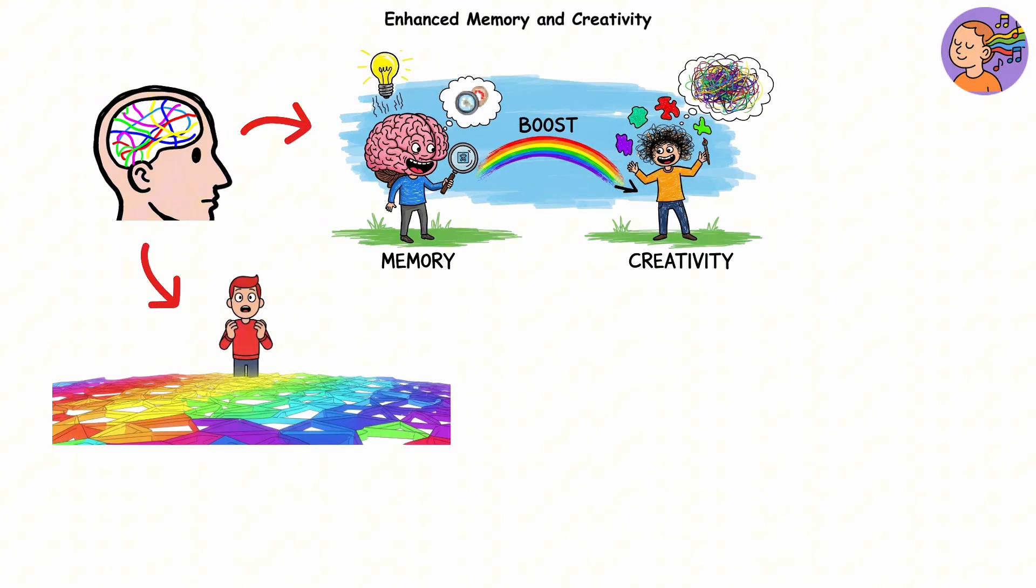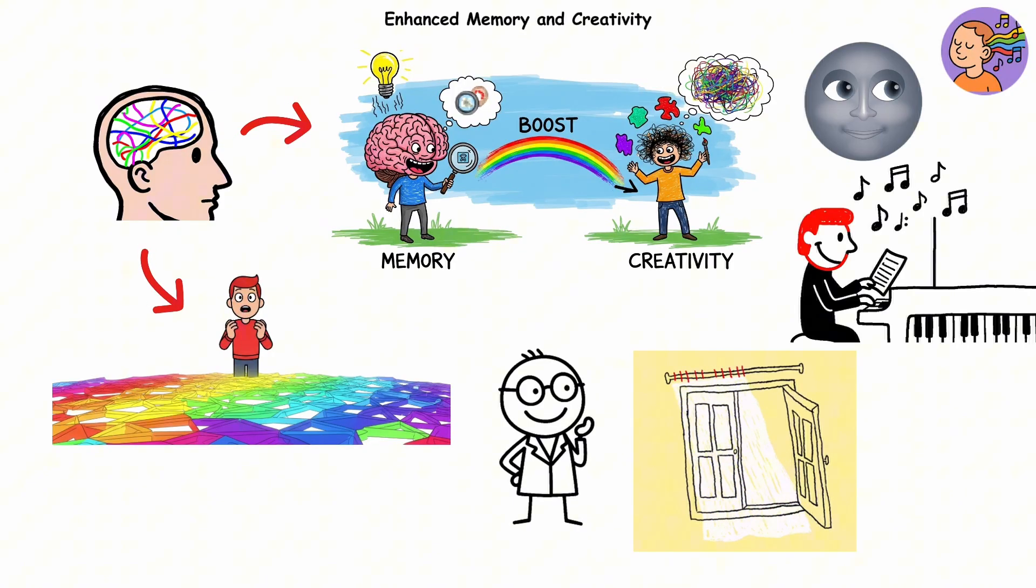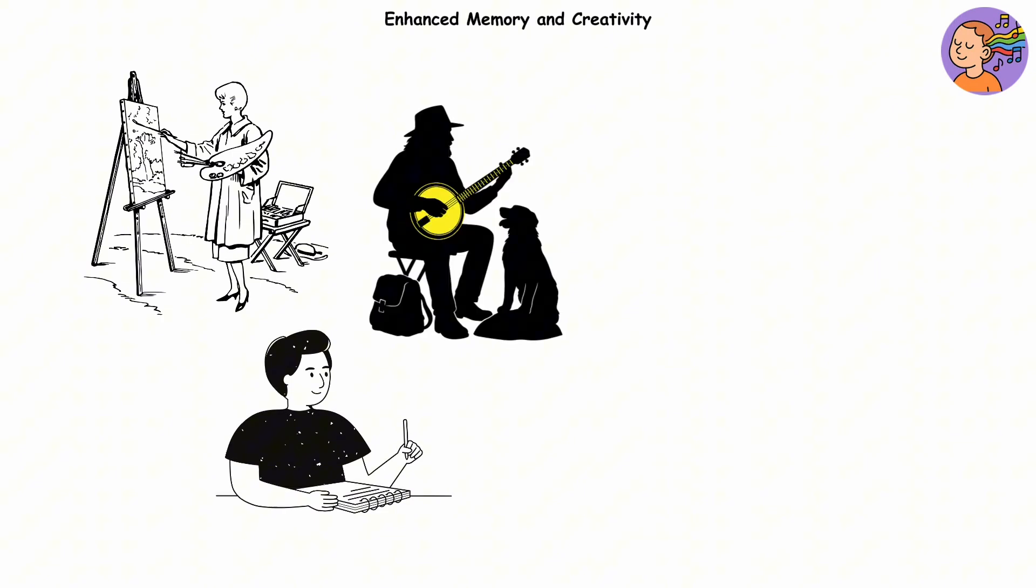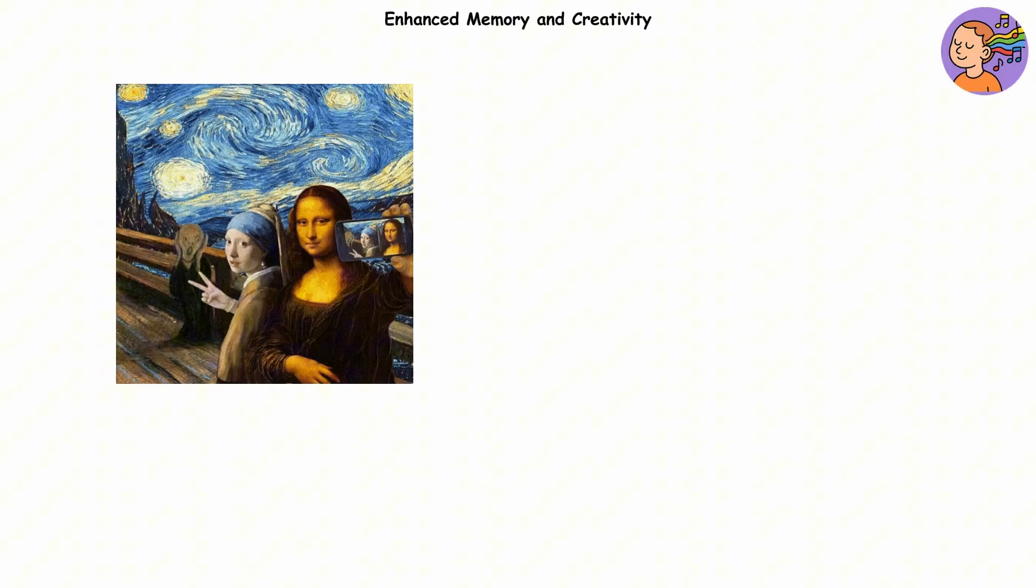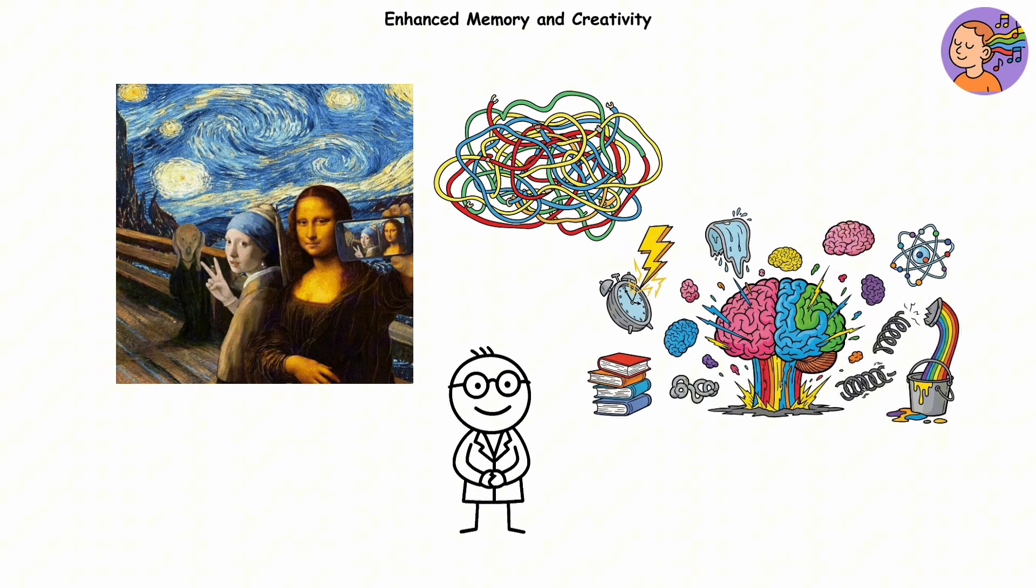This crossover doesn't just make life more vivid, it boosts memory and creativity too. Imagine remembering someone's name because it feels like a nice breeze, or composing music that looks like a full moon. Many artists, writers, and musicians throughout history have had it, from Kandinsky to Pharrell Williams. Synesthesia turns perception into art, proof that a little chaos in the wiring can make the mind brilliantly multicolored.